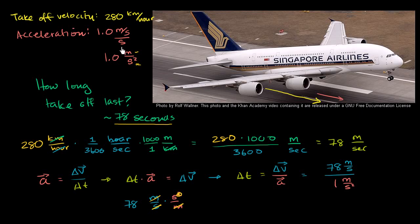In the last video, we figured out that given a takeoff velocity of 280 kilometers per hour, and if we have a positive value for any of these vectors, we assume it's in the forward direction for the runway. Given this takeoff velocity and a constant acceleration of 1 meter per second squared,